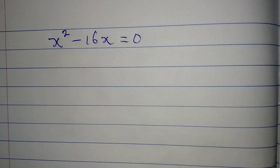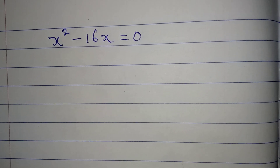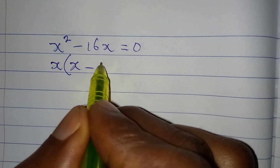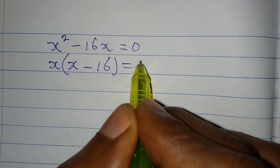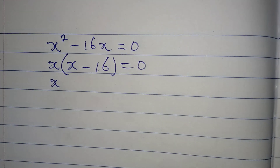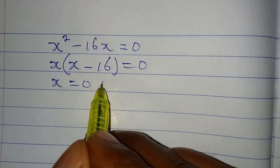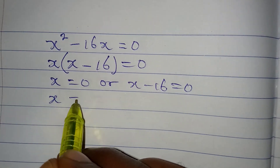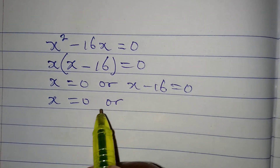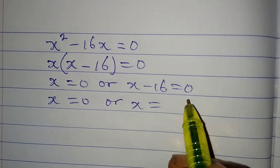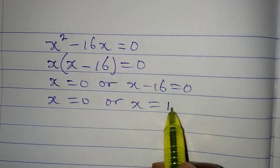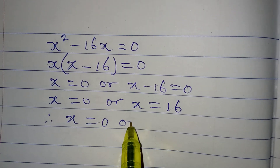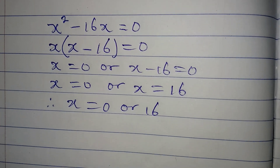We can solve this equation by factorization, so x comes out: x times (x minus 16) equals 0. Using the zero product rule: x equals 0, or x minus 16 equals 0. If x minus 16 equals 0, then x equals 16. Therefore, x equals 0 or x equals 16.